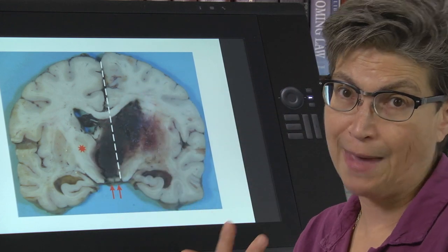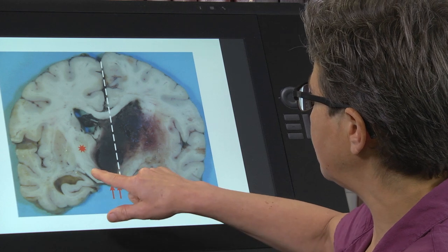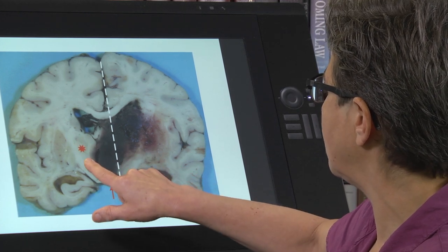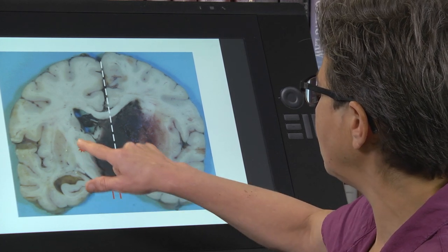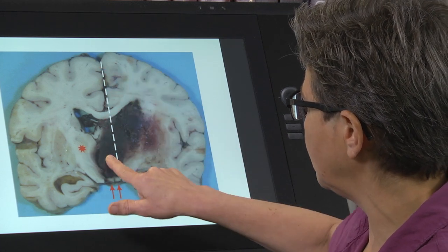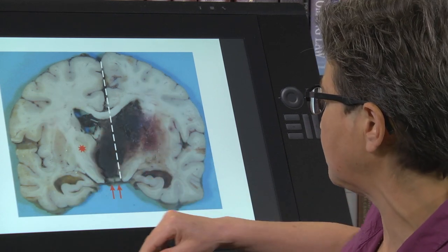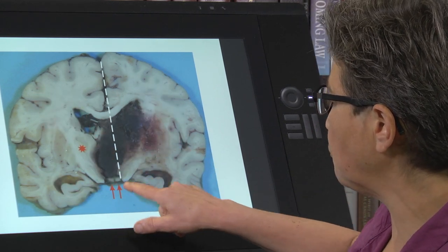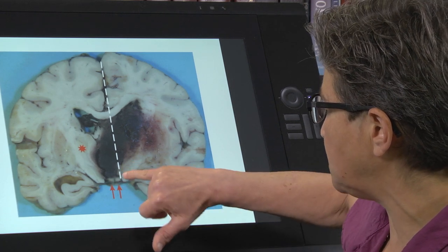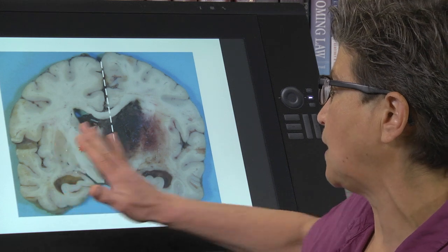Here is the thalamus, and the thalamus should be right to the left of the midline, but it's displaced much farther laterally. Both mammillary bodies should be split by the midline, but they're both located on the left side. So this mass effect is pushing stuff over to the side.